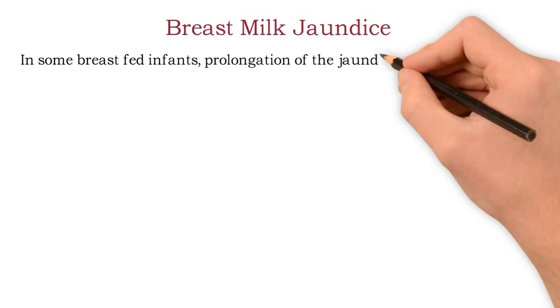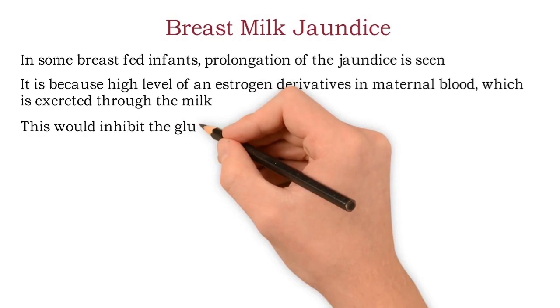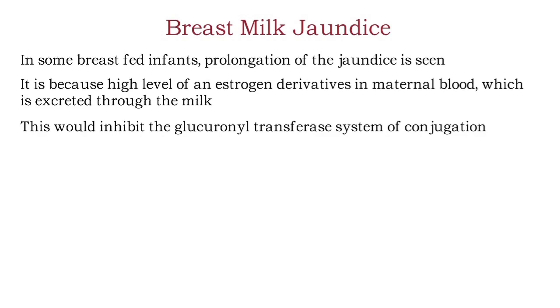Now, breast milk jaundice: in some breastfed infants, prolongation of physiological jaundice is seen. This is because high levels of estrogen derivatives in the maternal blood are excreted through milk, which inhibit the glucuronyl transferase system of bilirubin conjugation. So breast milk jaundice is essentially a prolongation of physiological jaundice.